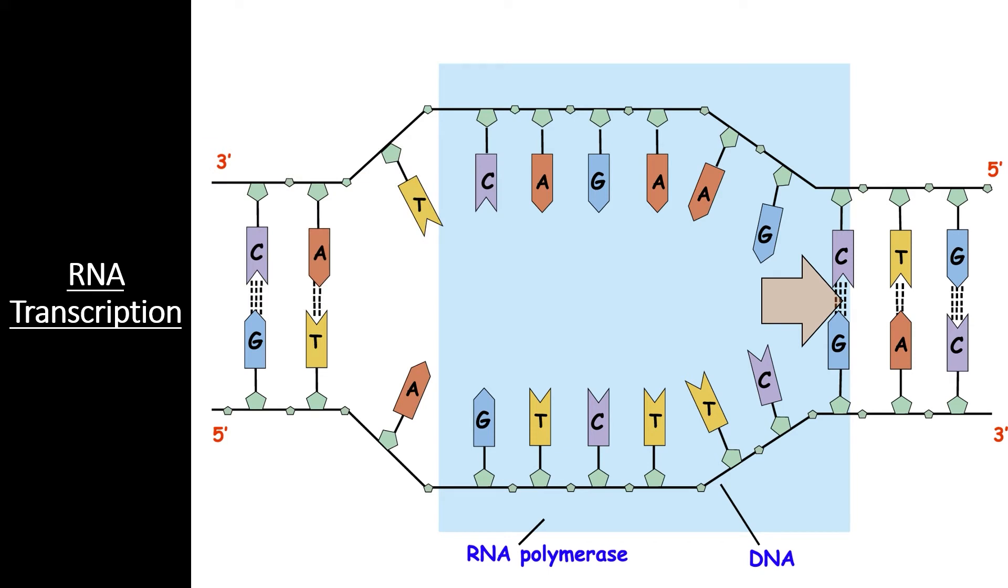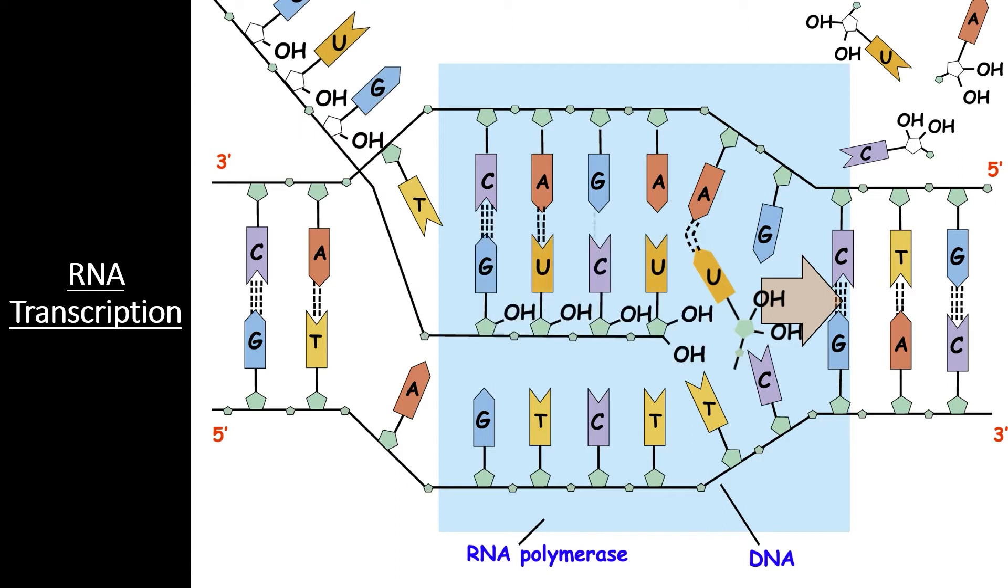The RNA polymerase enzyme opens up a transcription bubble in the DNA strand. This allows free RNA nucleotides to hydrogen bond with the template strand. As each nucleotide of the template strand hydrogen bonds to a complementary free-floating RNA nucleotide, the RNA polymerase catalyzes the reaction to form the phosphodiester bond between the 3' OH group of the growing RNA sequence and the 5' phosphate group of the free nucleotide. This part of the RNA transcription process is known as elongation.